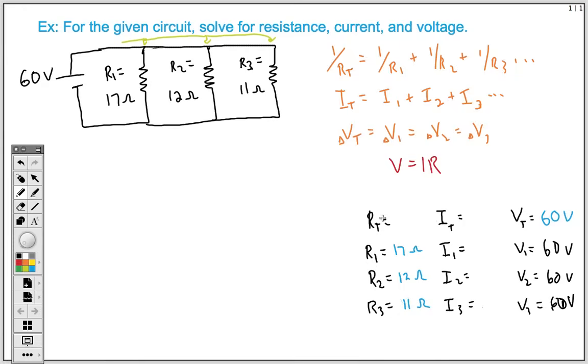And next, I want to attack this total resistance. And the reason why is because I know all three of my resistors, so let me show you how we do that. We're going to utilize our first rule here, where our resistance is an inverse, or the reciprocals. So 1 over total resistance is going to equal 1 over R1, which is 17. We're going to add that to 1 over R2, which is 12. And we're going to add that to 1 over 11, which was our third resistor.